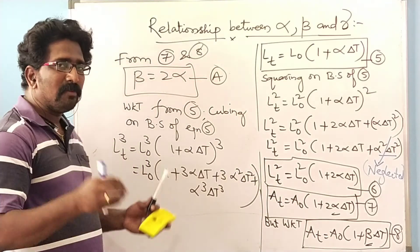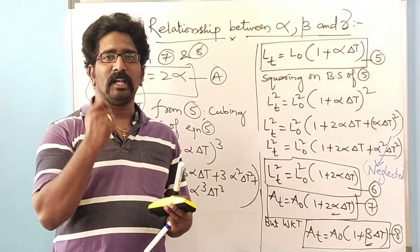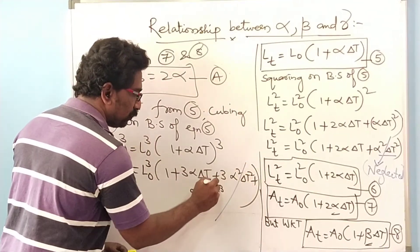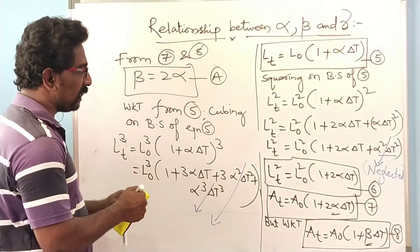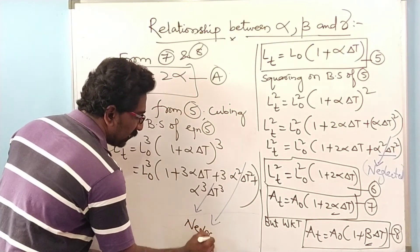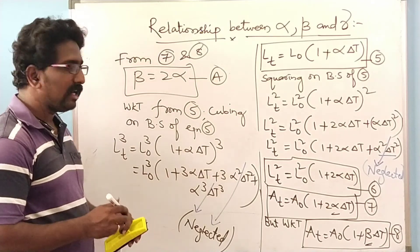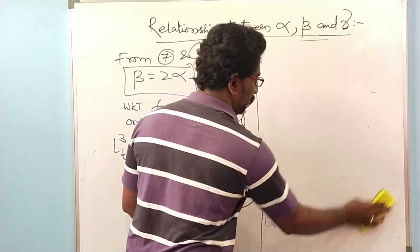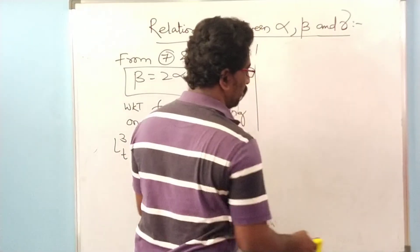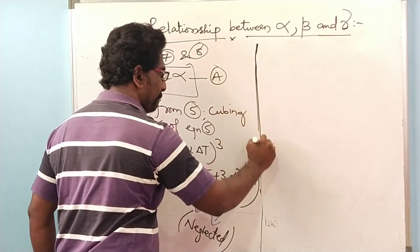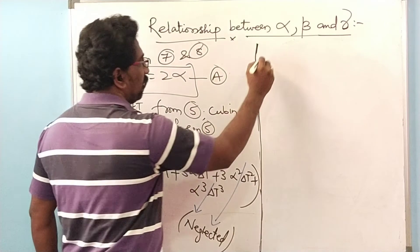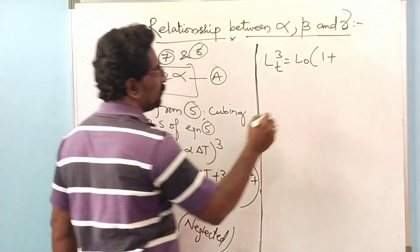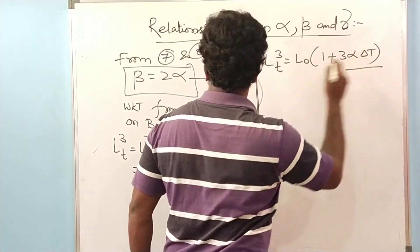Since alpha is a very small value, alpha squared and alpha cubed become even smaller compared to alpha. Therefore these two higher-order terms can be easily neglected. After neglecting them, the equation becomes L-T cubed equals L-naught cubed times (1 + 3 alpha delta T). Let this be equation number 9.